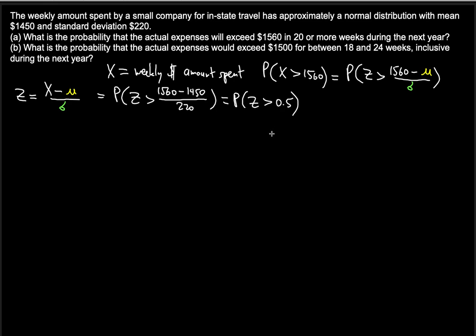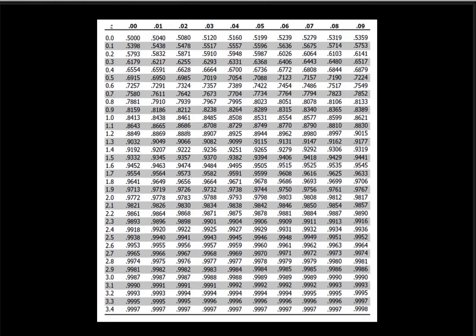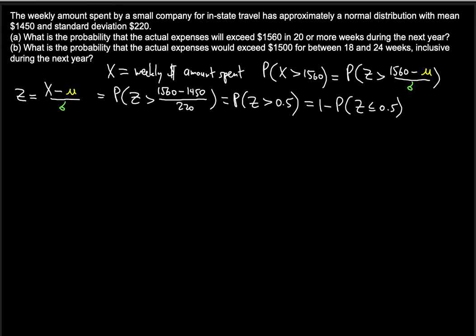We need the probability that Z exceeds 0.5. To do that, we subtract from 1 the probability that Z is less than or equal to 0.5: 1 − P(Z ≤ 0.5). This transformation is necessary because the Z-table gives cumulative probabilities for Z values less than the target value.